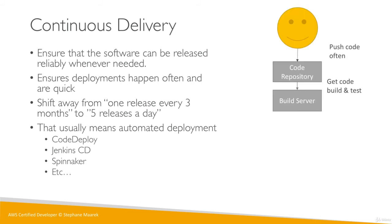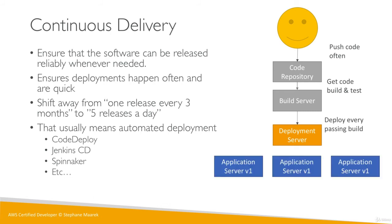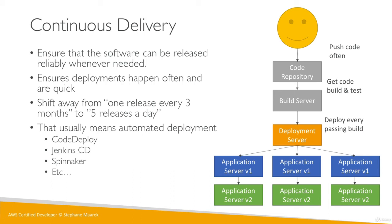So what does it look like? We push the code often, the build server gets it and builds and tests — that's the continuous integration part. Then we have a deployment server that deploys every build that passes. Our application was running version one, and the deployment server runs scripts to make sure the application goes from version one to version two, then version three, and so on, every time we push to the repository. This whole pipeline is really what continuous delivery is about — deploying as often as possible, predictably and reliably — because when you actually want to go to production, you want it to work very quickly and deterministically.